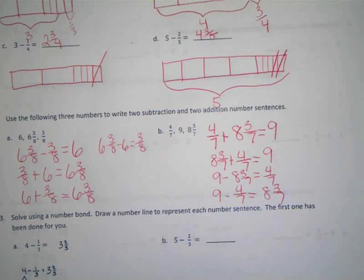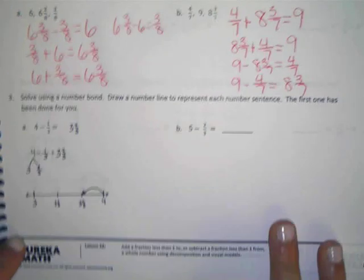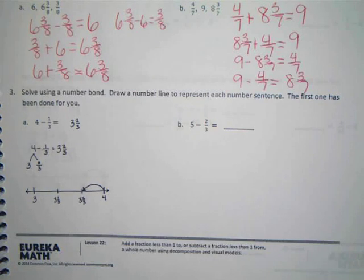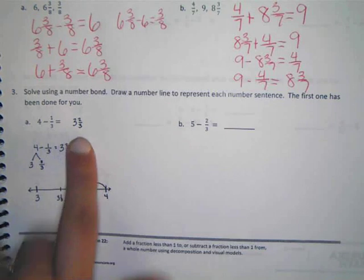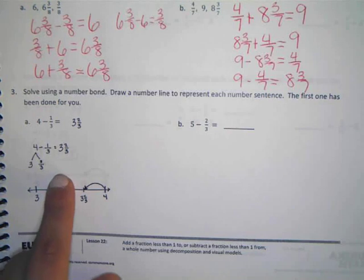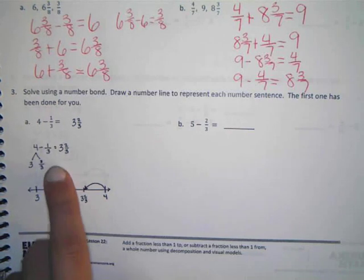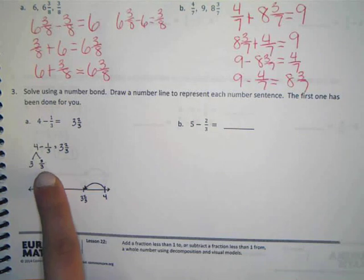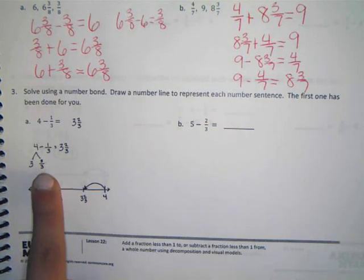If you're not done, that's all right. Number three. Solve using a number bond. Draw a number line to represent each number sentence. The first one has been done for you. All right, so they were doing four minus one third and they said it equals three and two thirds. They said that four is the same as three and three thirds put together. Do you guys agree? Yeah. So, when they minus one third, that leaves them with a three still, but then they have two thirds left. I kind of like doing it that way better than the tape diagrams. Do you guys too? Yeah.